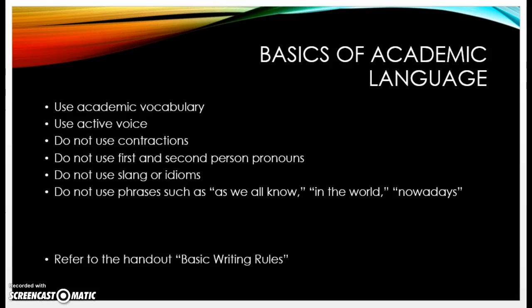So I want to talk about a few of the basics of academic language. First, you want to use academic vocabulary, since many words used in everyday conversation are not appropriate for academic writing. Another thing is you want to use active voice rather than passive voice. Also, you want to try to avoid using contractions — for example, instead of can't you should write out the uncontracted form: cannot.